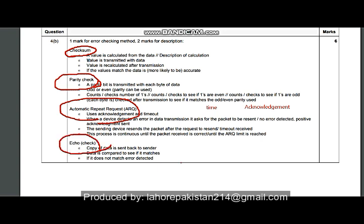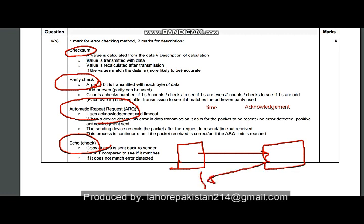In echo check, the sender sends a copy of data to the receiver. The receiver, without checking it, sends the same copy back to the sender. The sender then compares both copies — if they are the same, it signals the receiver that the data is correct. If the copies differ, the sender sends a corrected version to the receiver again. These were the four error-checking methods that can be discussed in this question.